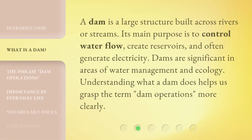A dam is a large structure built across rivers or streams. Its main purpose is to control water flow, create reservoirs, and often generate electricity. Dams are significant in areas of water management and ecology. Understanding what a dam does helps us grasp the term 'dam operations' more clearly.